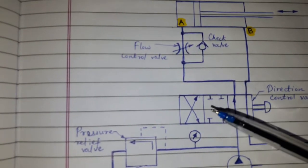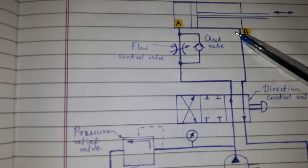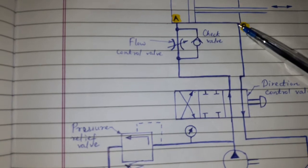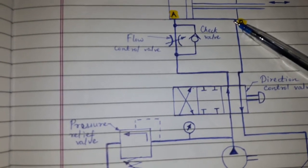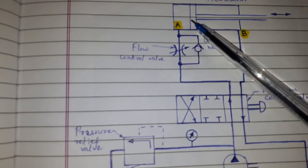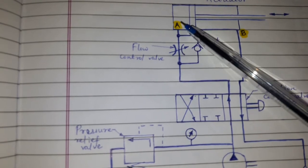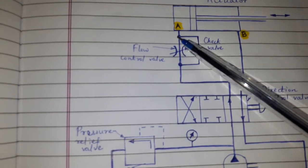When the direction is reversed, the pressurized oil enters through port B of the piston and piston will move from right to left. Oil from the other side of the piston will return through port A.